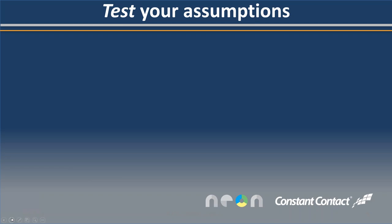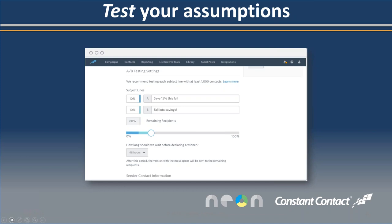Most importantly, no matter what tool you use, make sure you test your assumptions. Never rely on just the best practices you learn in a webinar like this, never rely on your own instincts, don't rely on what the board says is a best practice — test and test constantly. Constant Contact gives you the ability to test your subject line assumptions: you can put in two different subject lines, decide how much of your audience will receive which subject line, and decide how long the test will run. For example, 10% of the list gets one subject line, 10% gets the other, and the test runs 48 hours — then you're actually sending the best subject line that wins.